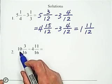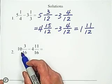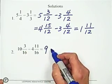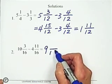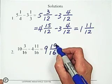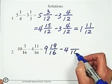But we need the borrowing. Because 3 over 16 is less than 11 over 16. So borrow 1 from whole number portion. And add the denominator to numerator, which is 19. Minus 4 and 11 over 16.